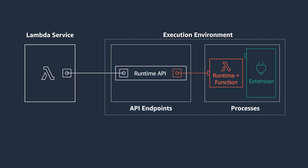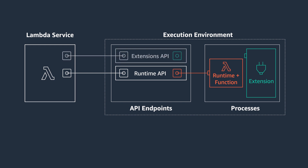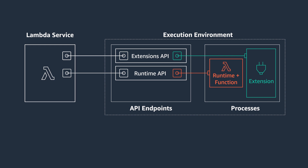Extensions are a new way for tools to more easily integrate deeply into the Lambda environment. They use the extensions API to request lifecycle events, process them, and then tell the Lambda service when they are done. Through this API, extensions get greater control of the lifecycle of the environment. The Lambda service freezes it once the runtime and all extensions are done.